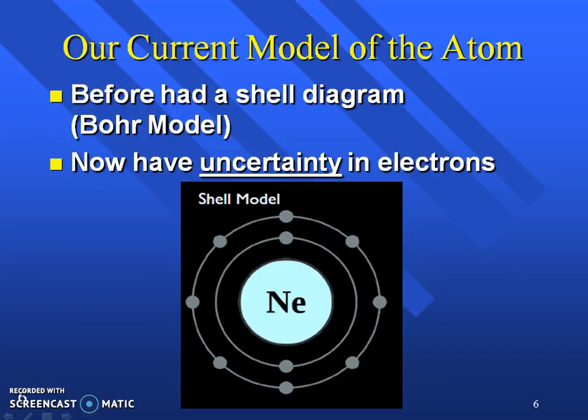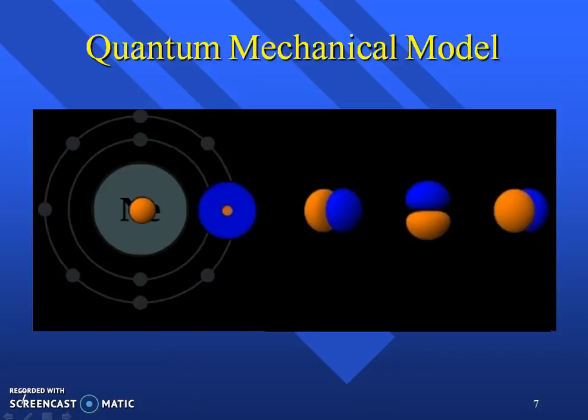The current model of the atom is a little different than what you probably learned in middle school or the Bohr atom. The Bohr atom just said we have a nucleus and we have these rings or shells around the nucleus where those electrons orbit. But there's a lot of uncertainty in those electrons.